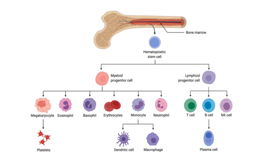How do NK cells develop from the bone marrow? Hematopoietic stem cells, or blood stem cells, are a type of multipotent stem cell that gives rise to various types of blood cells in the body. The hematopoietic stem cells in the bone marrow differentiate into NK cell precursors first, and through a series of developmental stages they eventually become mature NK cells.